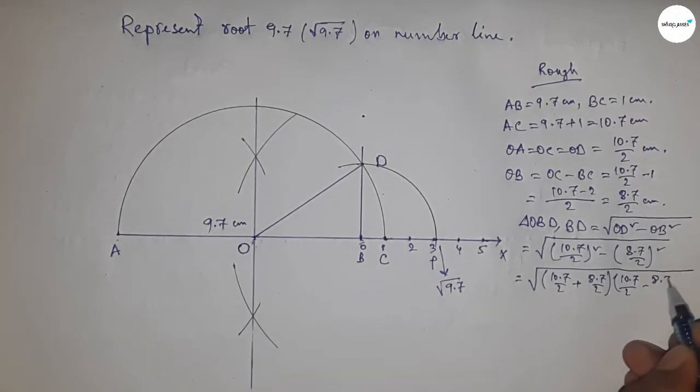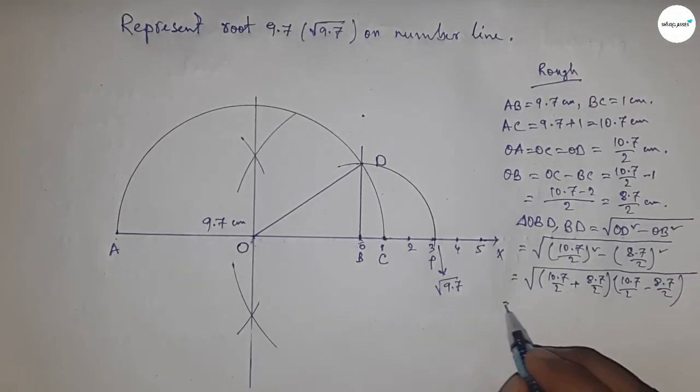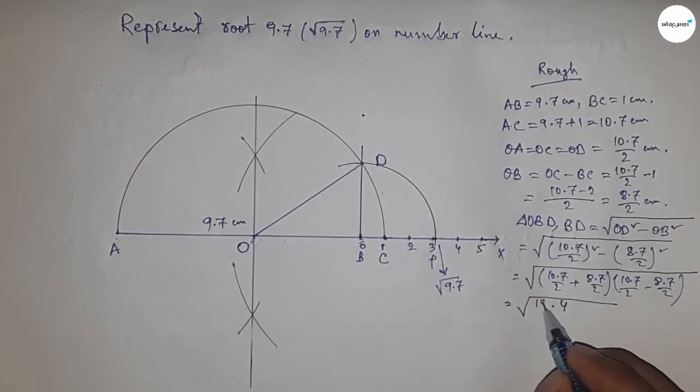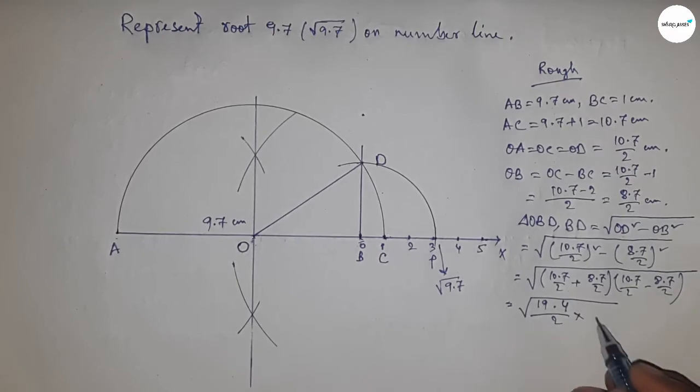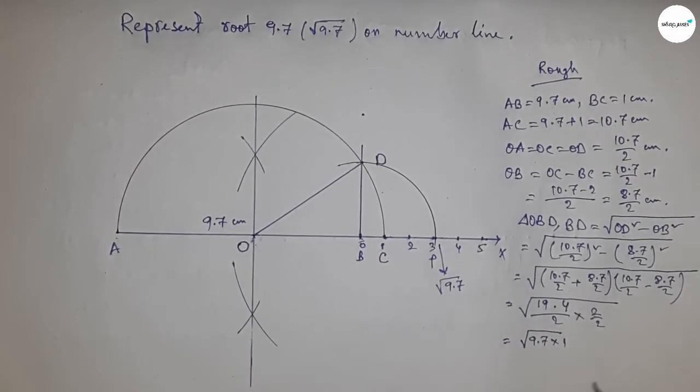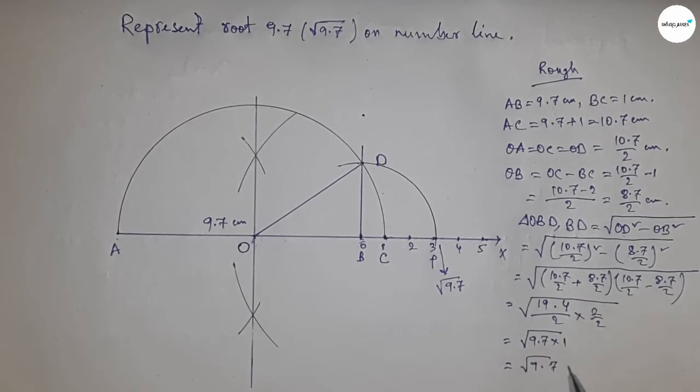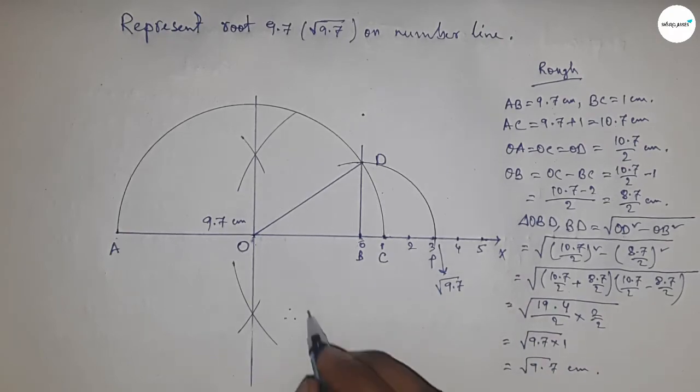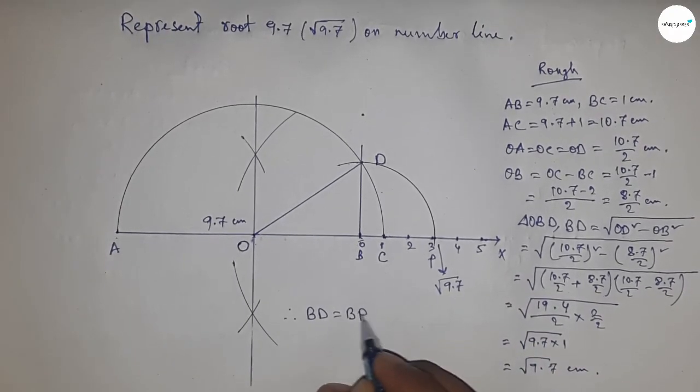Applying this formula with 10.7/2 plus 8.7/2 and 10.7/2 minus 8.7/2, we get (19.4/2)(2/2), which simplifies to the square root of 9.7 times 1, equals root 9.7 centimeters.